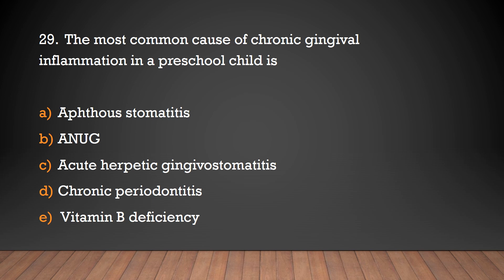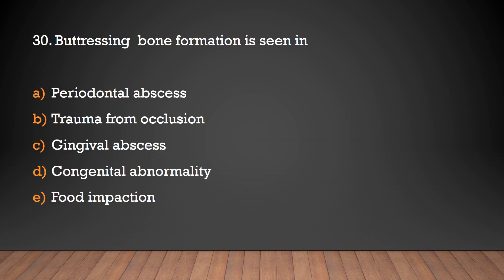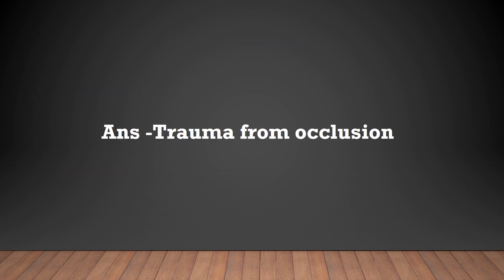The most common cause of chronic gingival inflammation in a preschool child is: aphthous stomatitis, ANUG, acute herpetic gingival stomatitis, chronic periodontitis, or vitamin B deficiency? The answer is acute herpetic gingival stomatitis. Buttressing bone formation is seen in: periodontal abscess, trauma from occlusion, gingival abscess, congenital abnormality, or food impaction? The answer is trauma from occlusion.